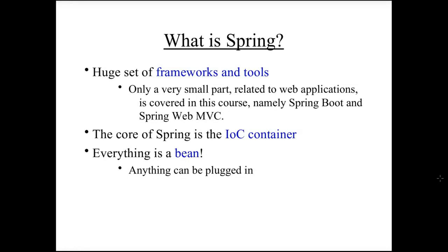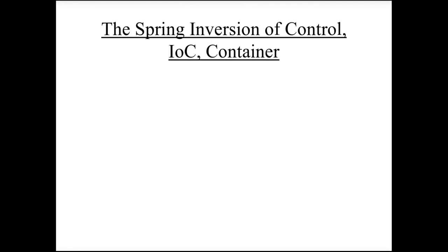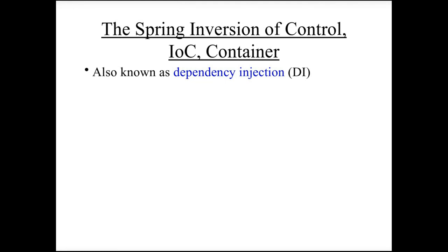Anything can be plugged in: beans can be plugged into the IOC container and connected together. So it essentially means we can inject anything into anything and make anything collaborate with anything, making it very flexible. IOC means inversion of control — the idea is that it's not objects themselves that create dependencies by using the new operator. Instead, it's the container that creates all objects and glues them together, injecting them into each other. IOC, or inversion of control, is also known as dependency injection; the two terms can be used interchangeably.